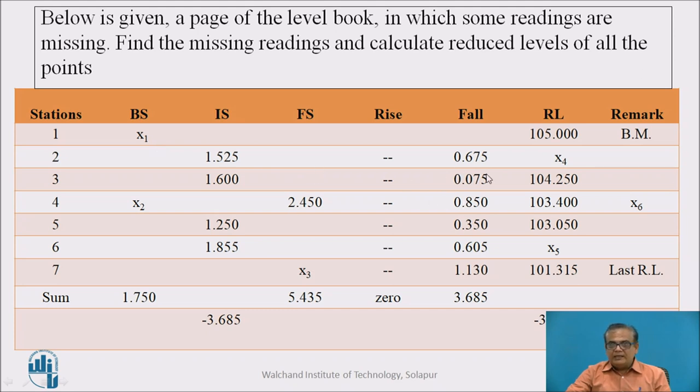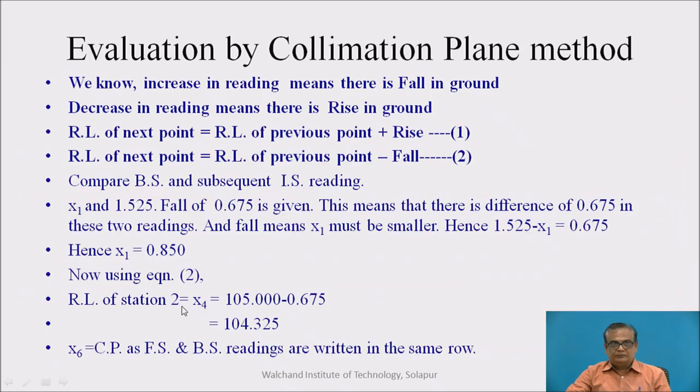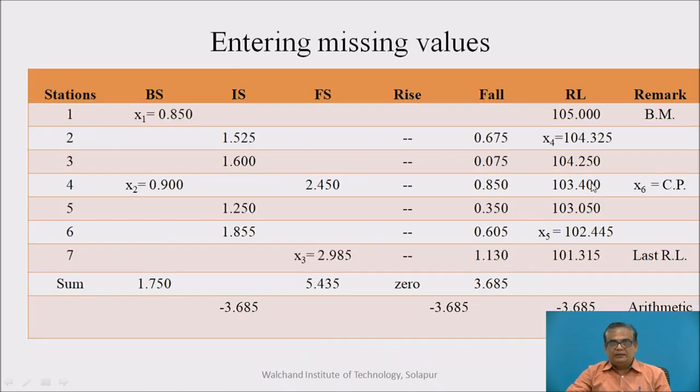Now, next missing value, which we can find easily, that we should consider. Now, X4, one can find easily from these two readings. Remember, RL of previous point, that is benchmark is known. Fall is given. Then RL of next point can be easily found. How? RL of previous point minus fall will give you RL of this particular next point, that is X4. It is a fall, so it is to be deducted minus. So, this will be the equation. 105.000 minus 0.675 will be equal to 104.325. This will be the RL of X, RL in the place of X4, station number 2.